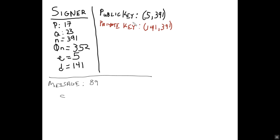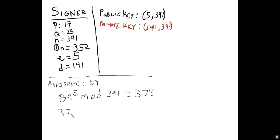That leaves us with a public key of e=5 and n=391, and a private key of d=141 and n=391 — this is what the signer keeps secret. If we take message m=89, raise it to the e power, and take that mod 391, we get the encrypted message c=378. That message is sent to the signer, who takes 378, raises it to the d power (141), and takes that mod n=391, which gives back the original message 89.